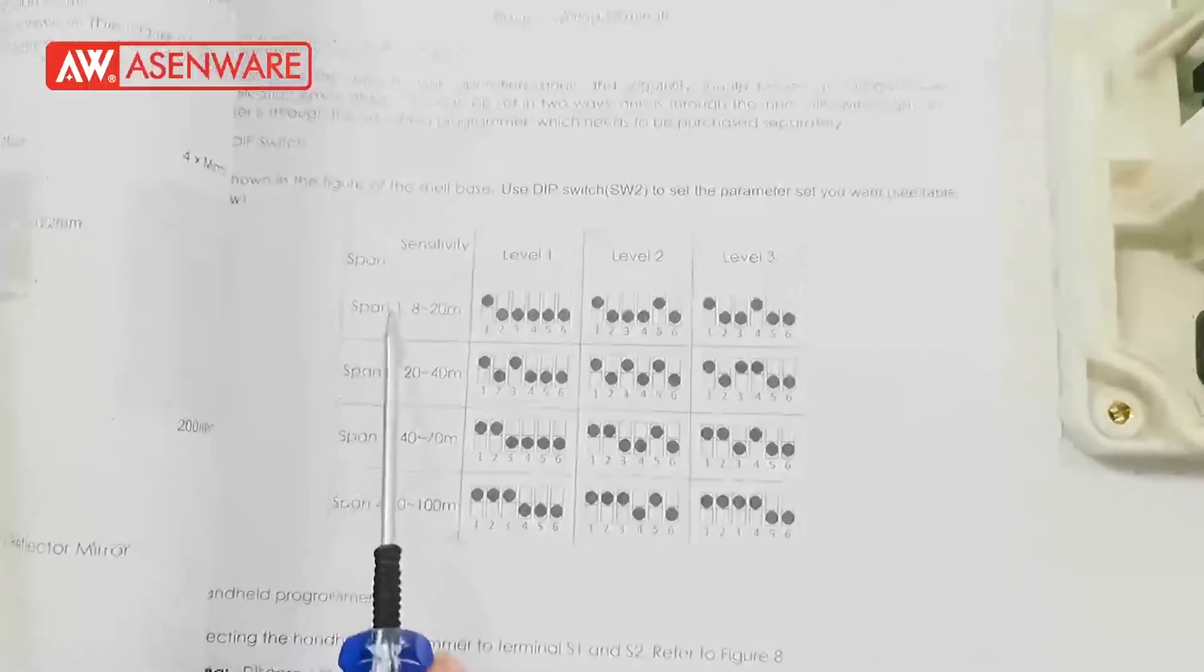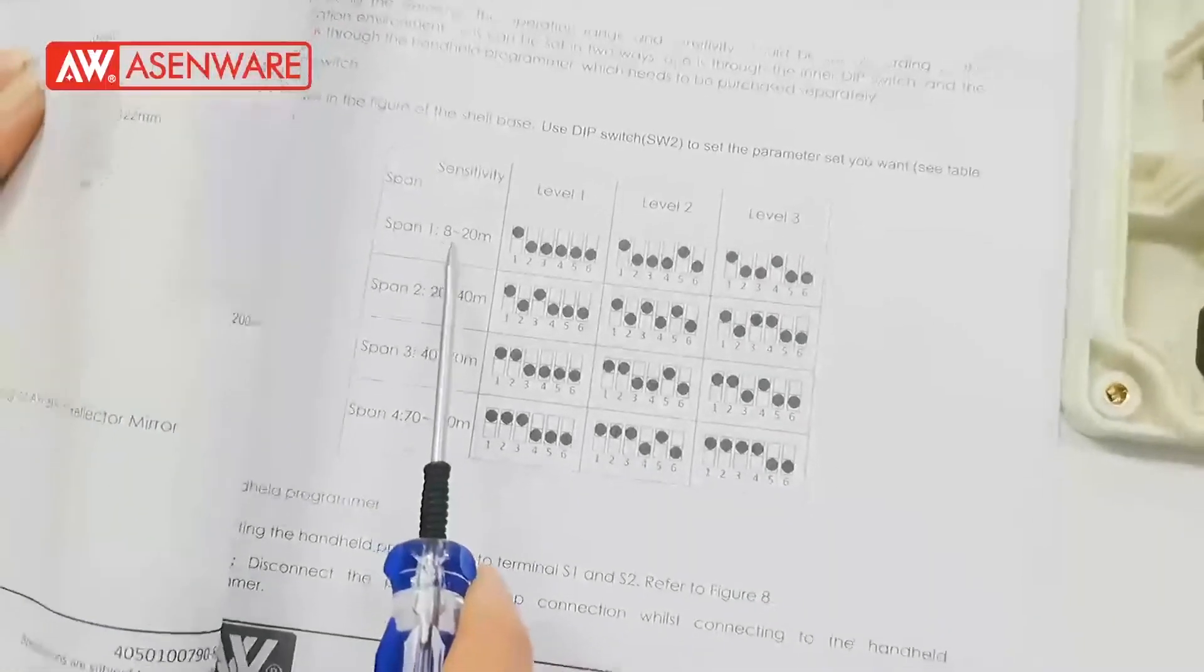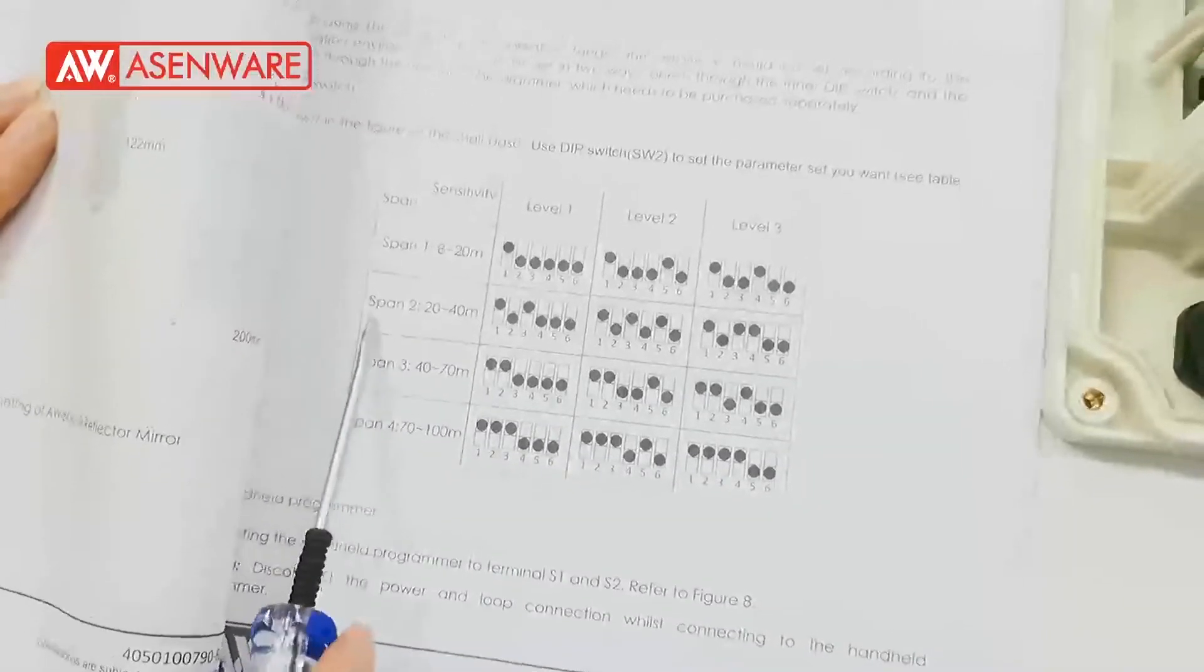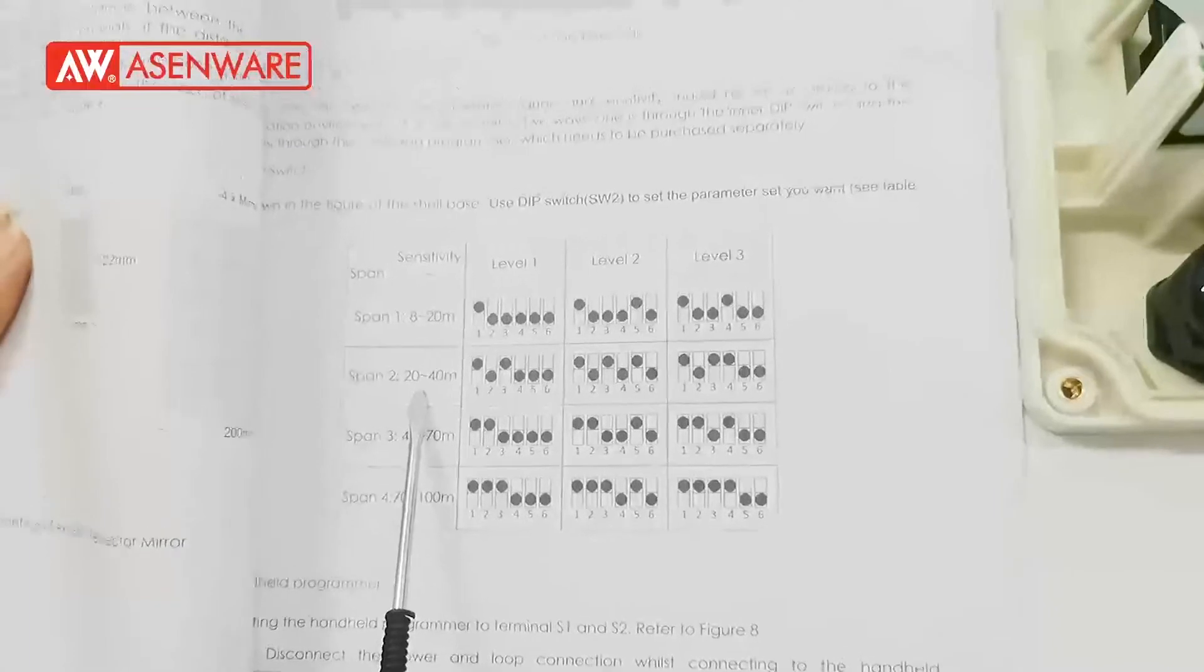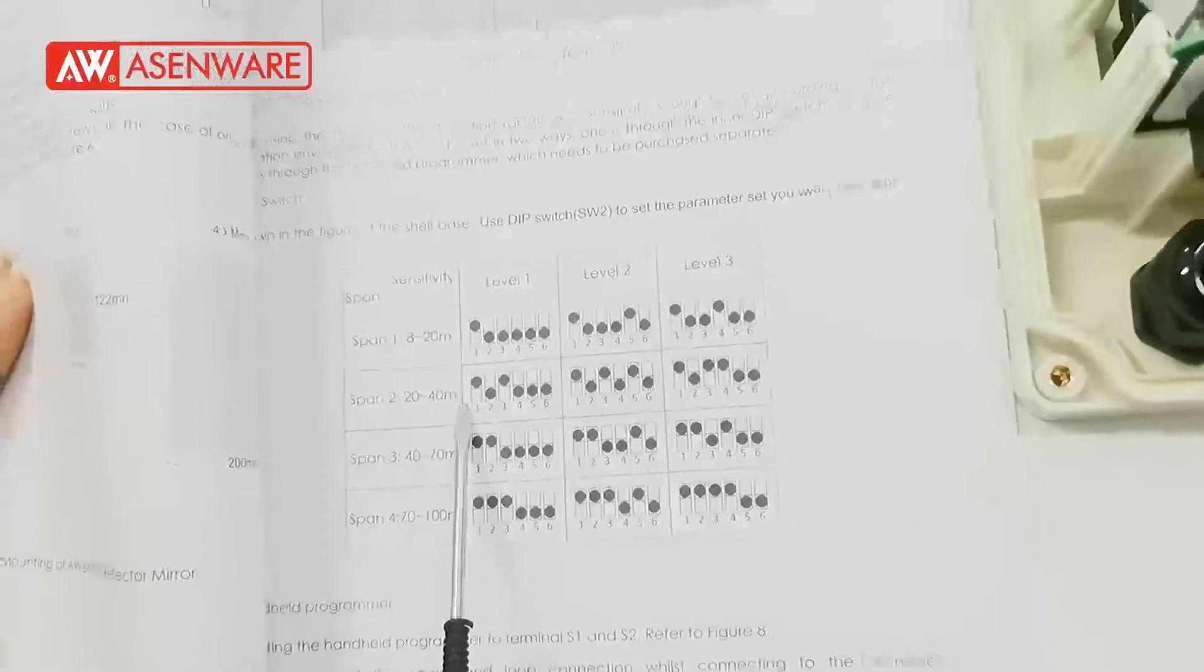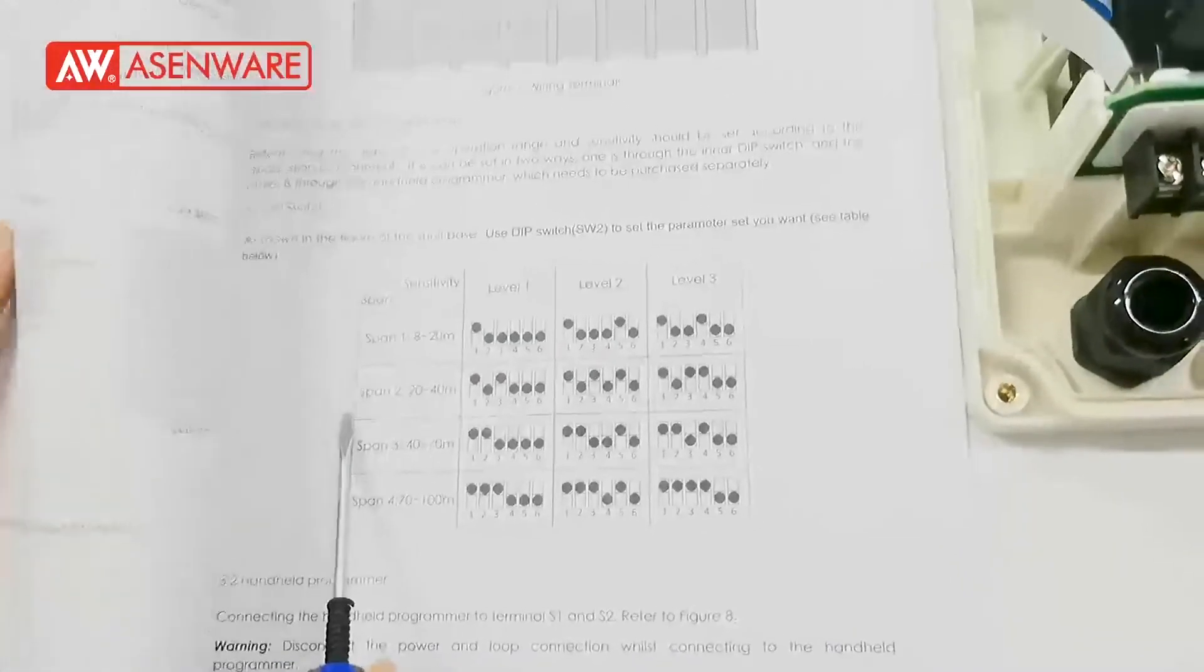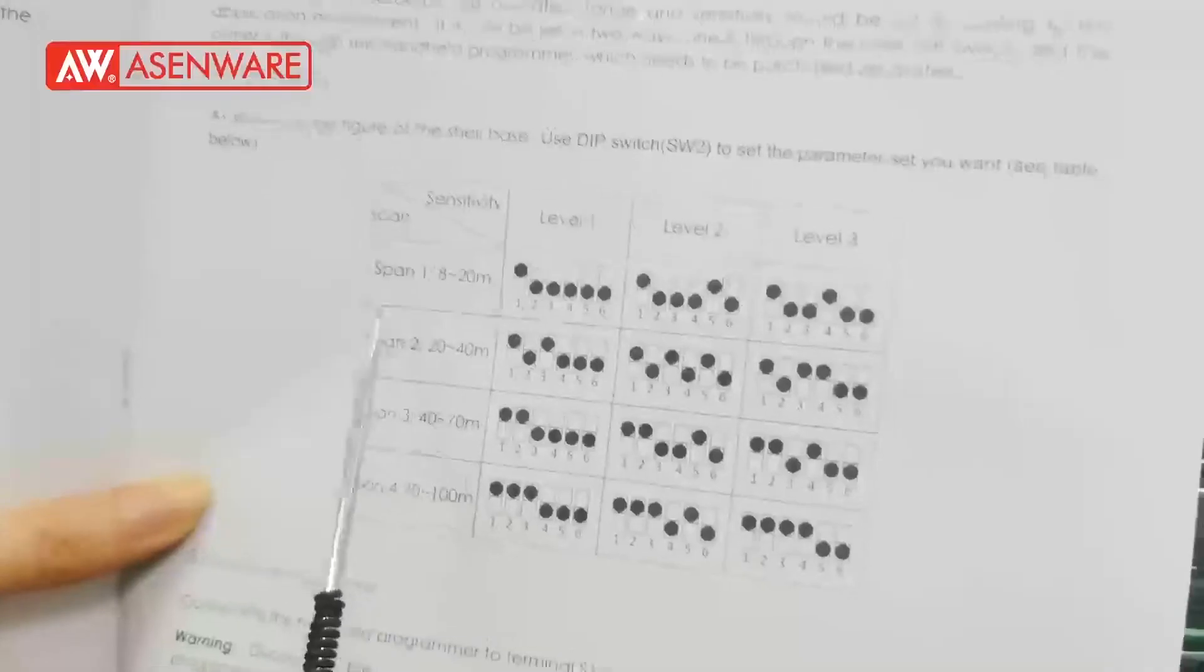And the span 1 means that the monitor distance is 8 to 20 meters. Span 2 means that the monitor distance is 20 to 40 meters. This monitor distance is based on your application environment.